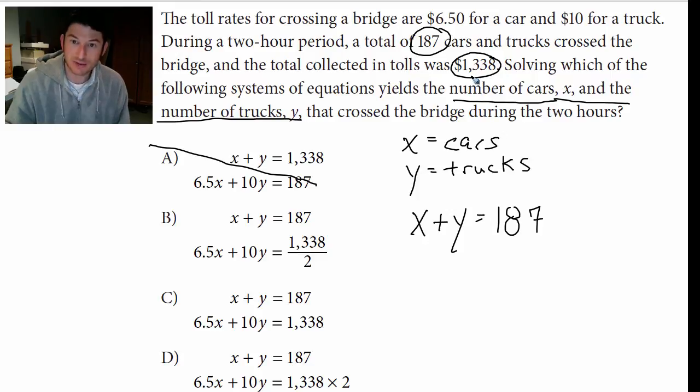Now I've got to figure out the money equation. It's $6.50 a car, so that's $6.50X plus $10 for a truck. That's $10 times however many trucks there were for a grand total of $1,338.